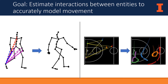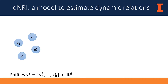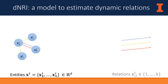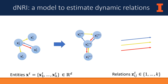Furthermore, it is reasonable to expect the types of interactions to change over time. We introduce Dynamic Neural Relational Inference, or DNRI, which explicitly models the interactions between different entities. Relations are modeled as discrete latent variables, which are inferred from the data and, unlike prior work, change over time.